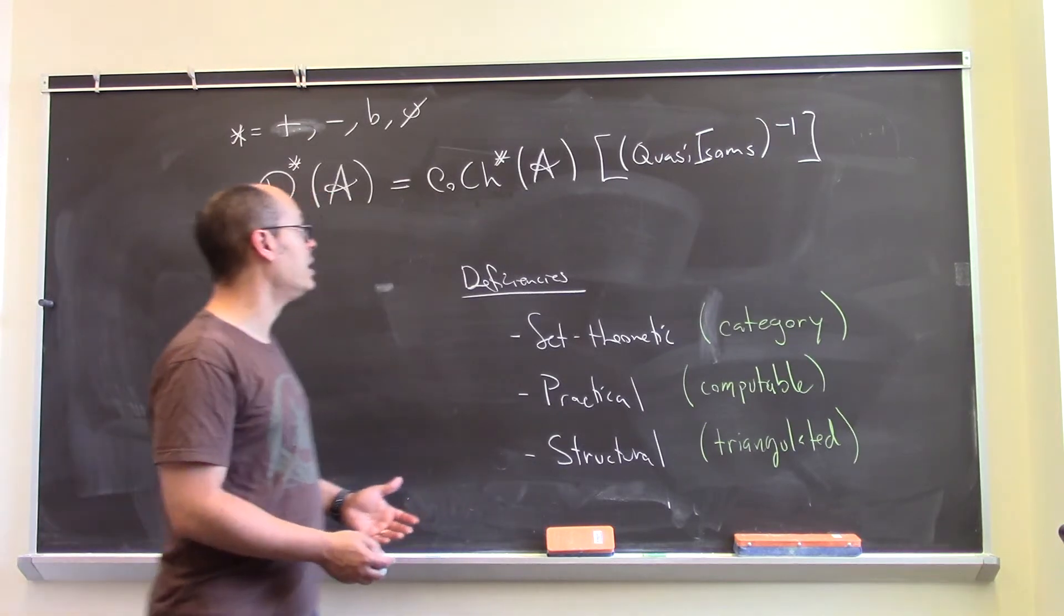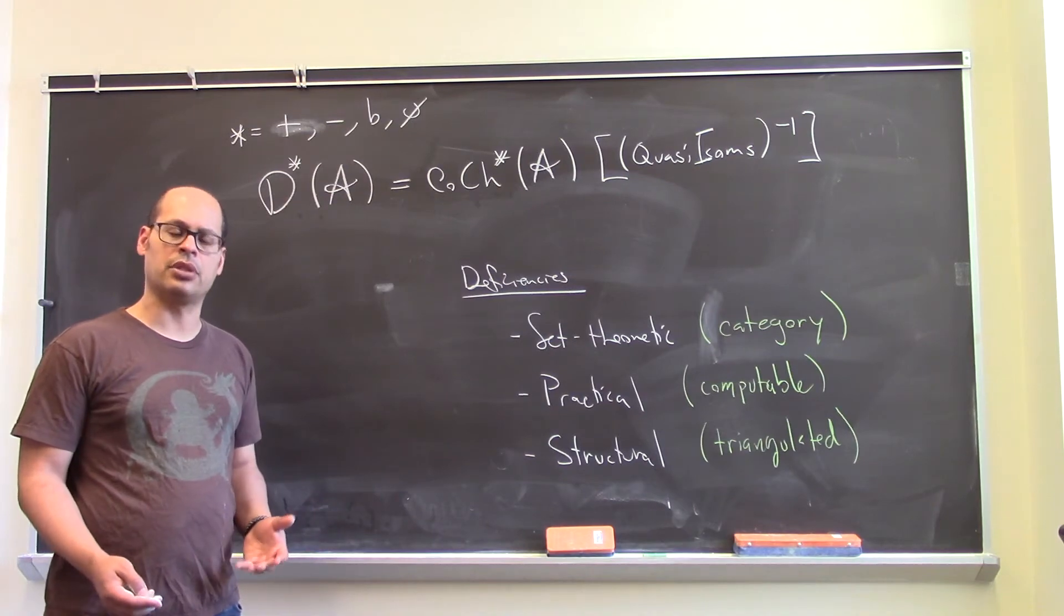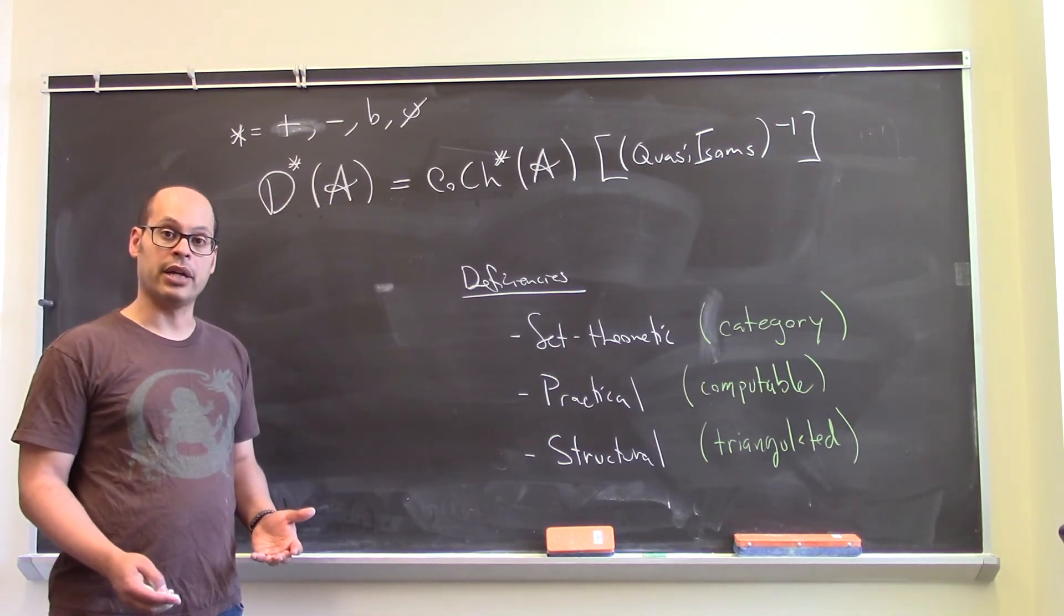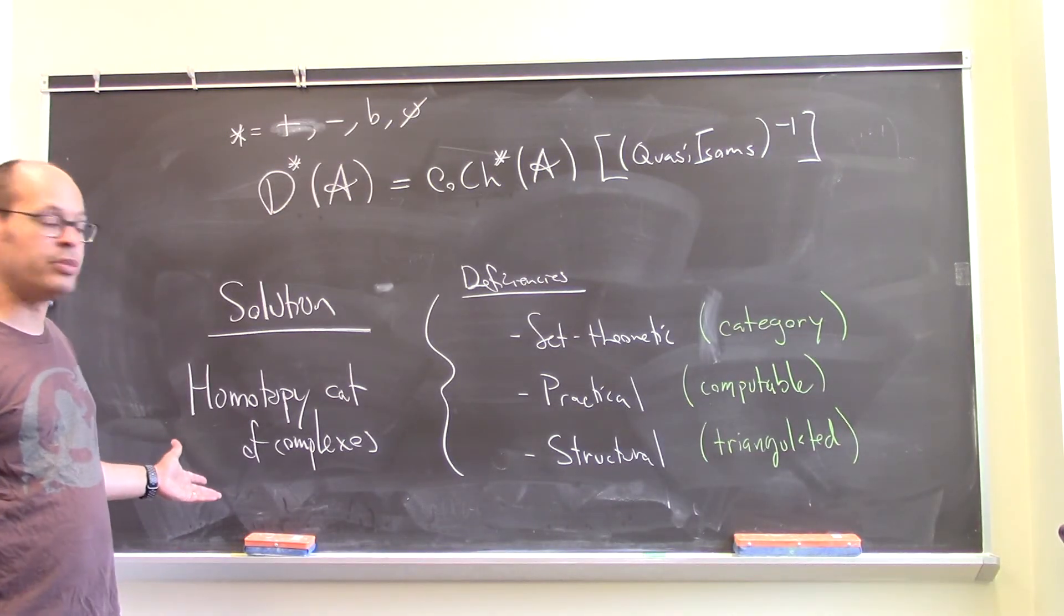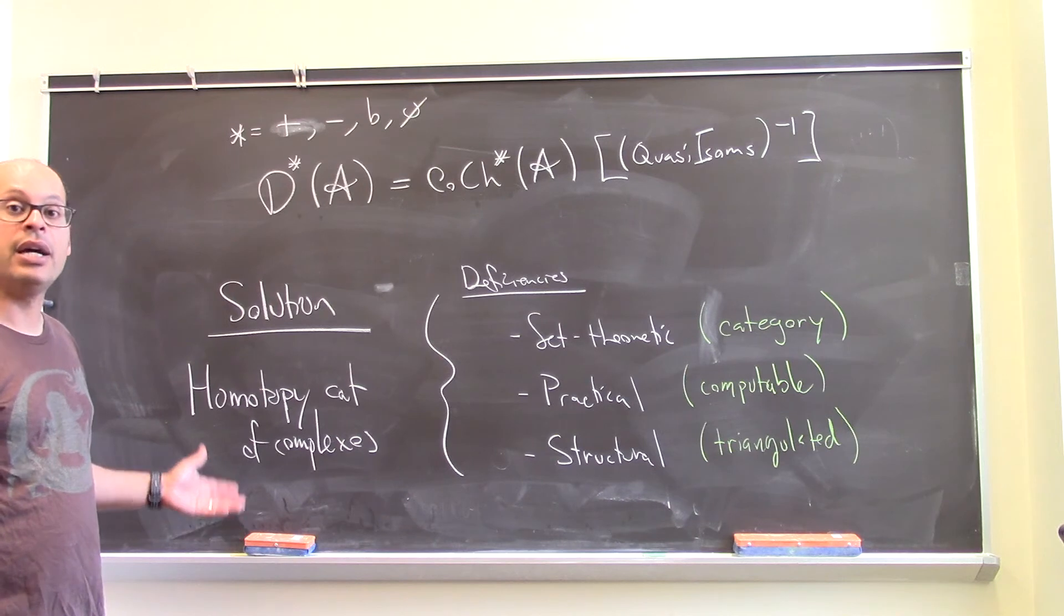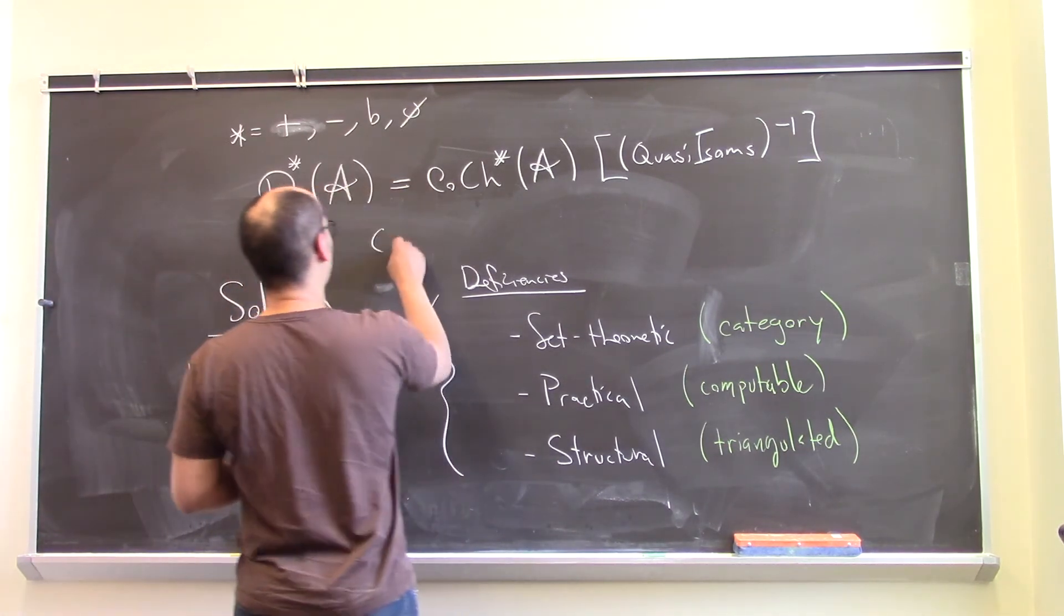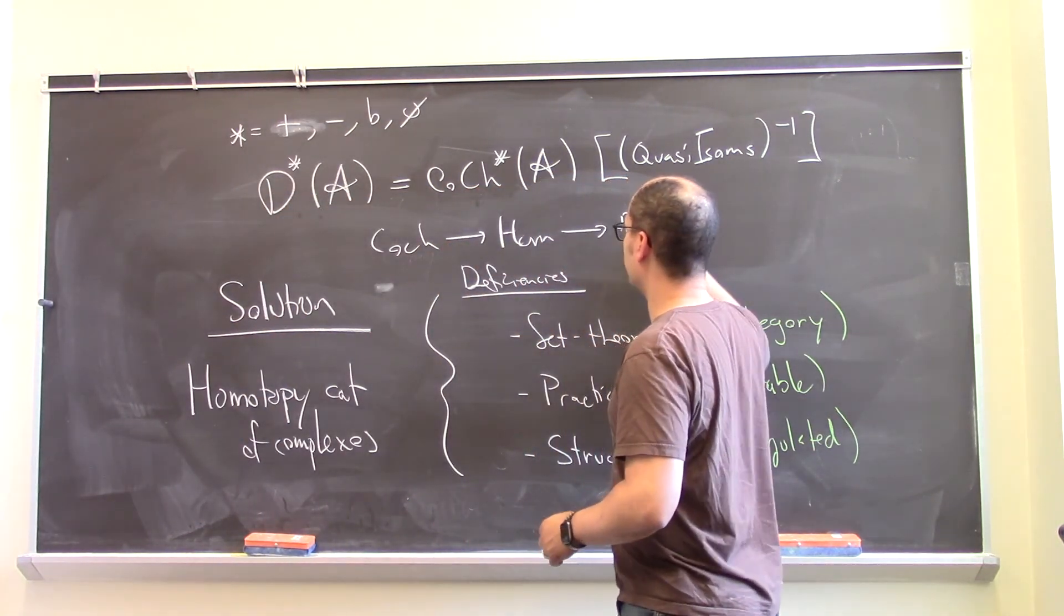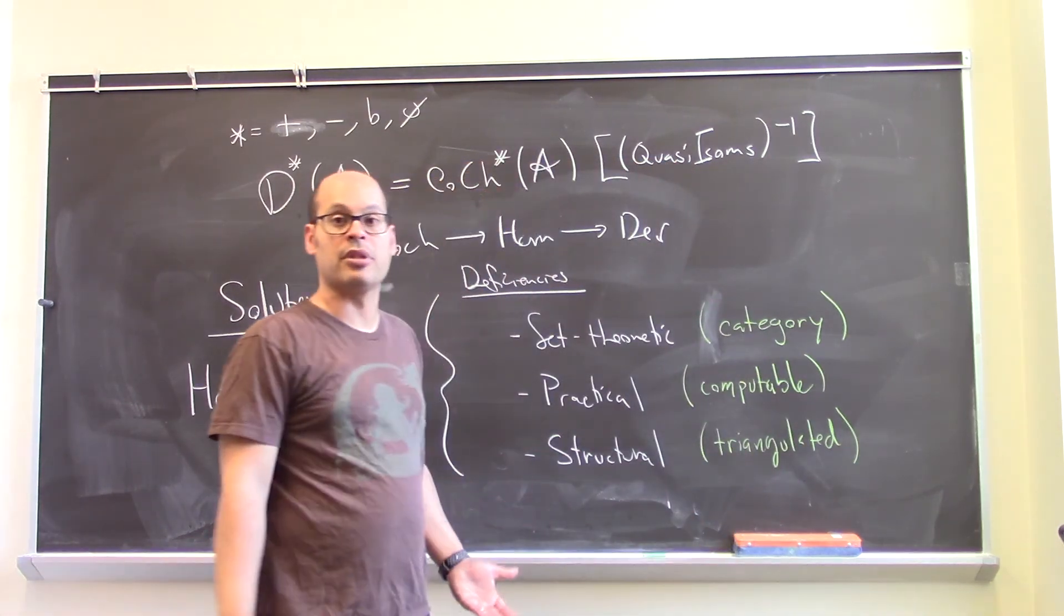The solution to all these problems is to pass through the homotopy category of complexes as an intermediate step, to first go from the cochain complexes to the homotopy category, and then to the derived category. Doing this, you'll see that all these problems can be circumvented.